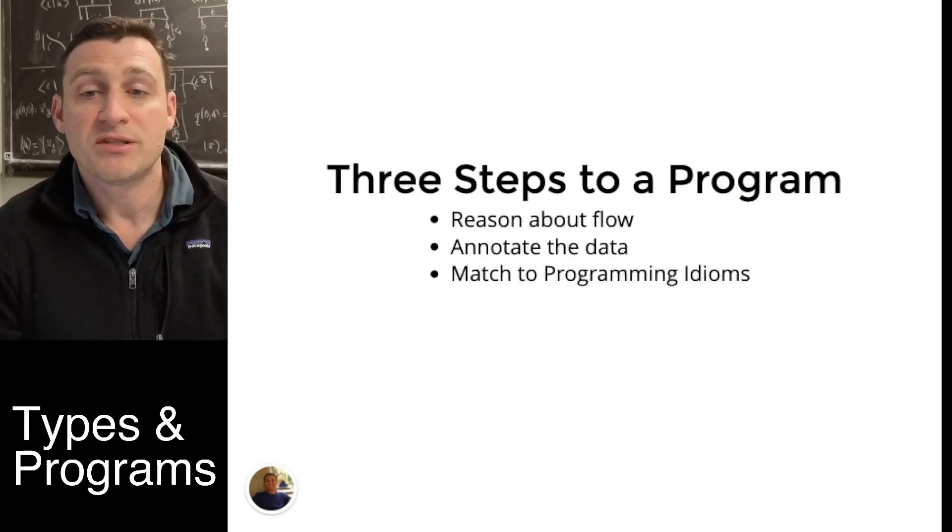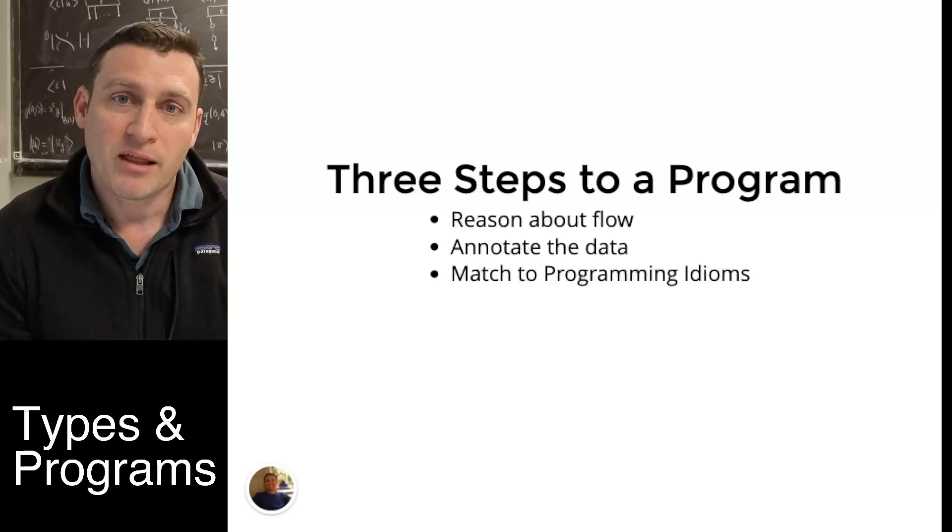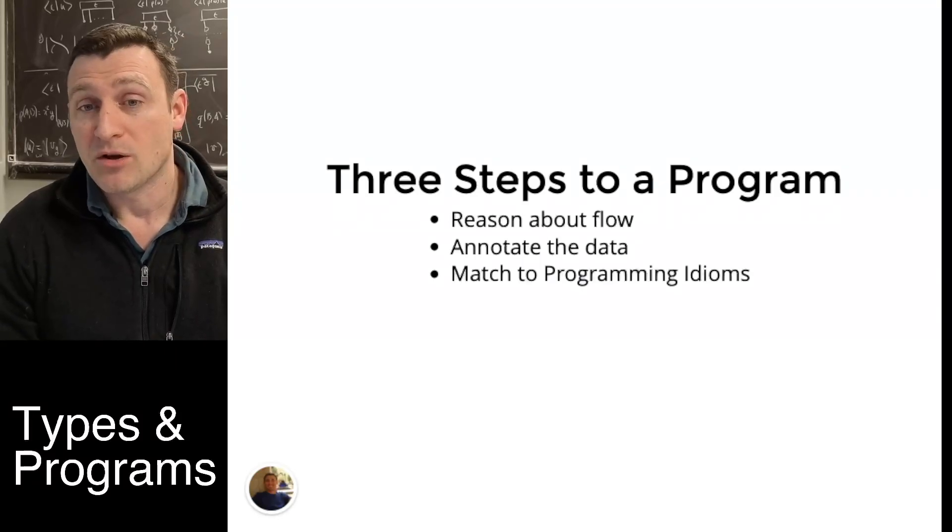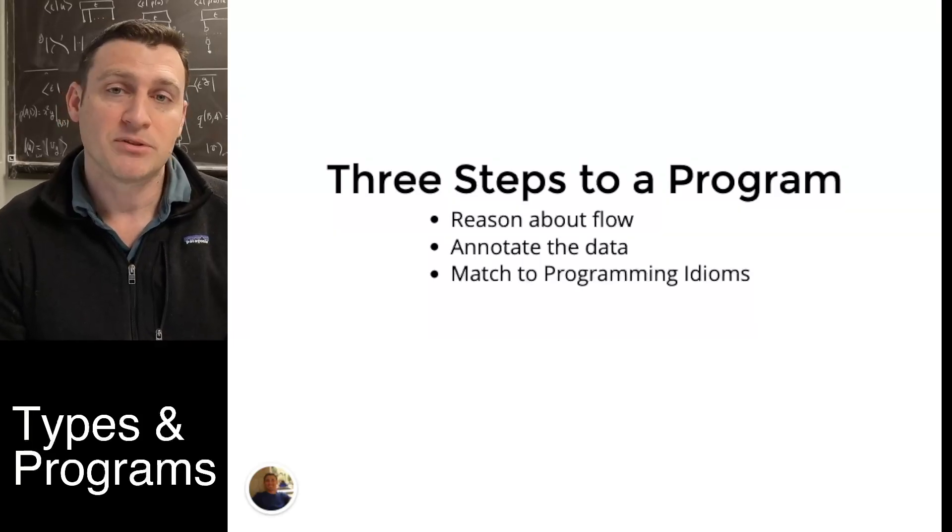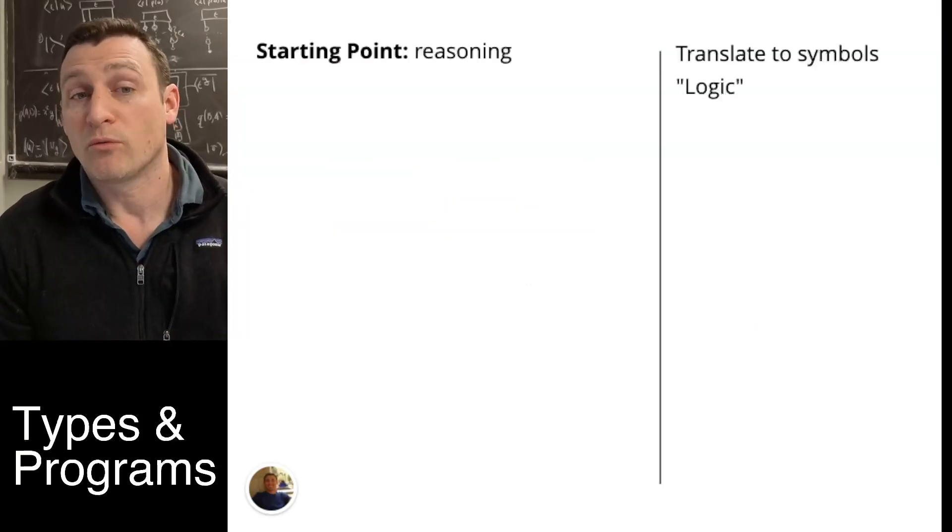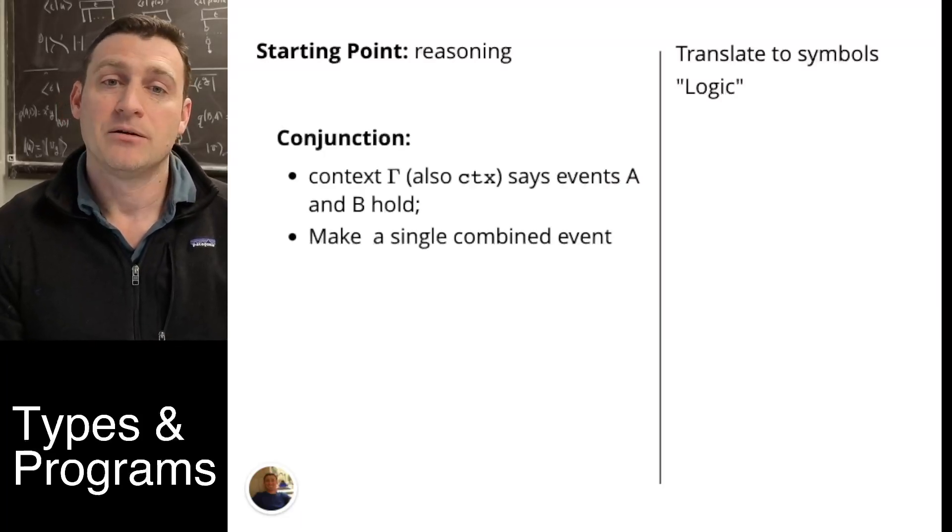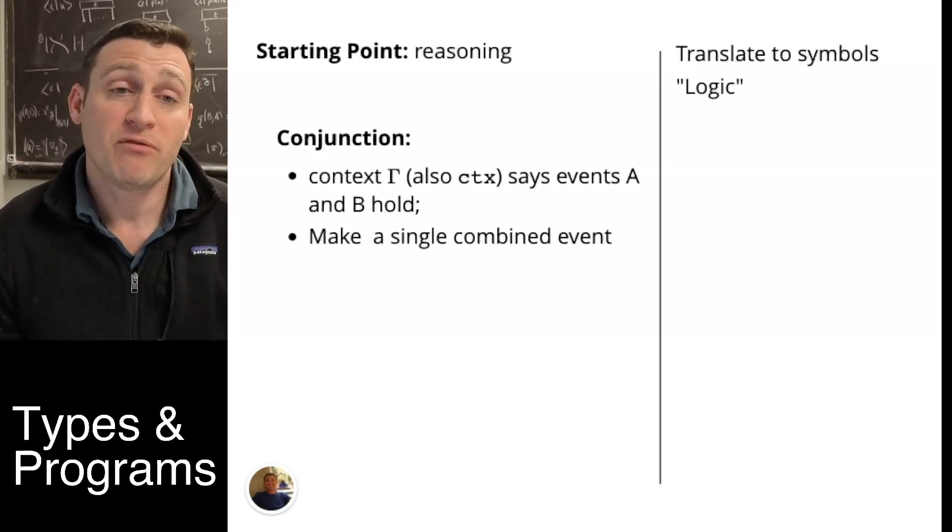We're going to try to take our logic, turn them into data, and then turn them into programs. We're going to do a three step process. We reason about the flow. This you'll see as flowcharts in many early programming languages. Then we're going to annotate the data. We're going to tell each other what the pieces are. And then we're going to match them to programming idioms. That means the style of programming languages. And we'll have some examples to see. We're going to start with the reasoning, the logic. And I'm going to pick our simplest operator, the AND. So in AND, we need some context. Otherwise, we don't get started. And we have some events, A and B, which we claim are valid in this context.